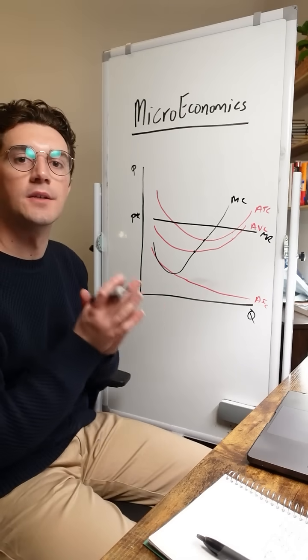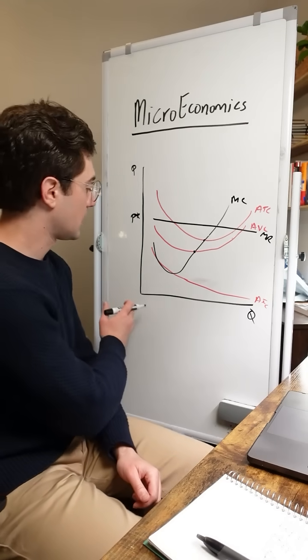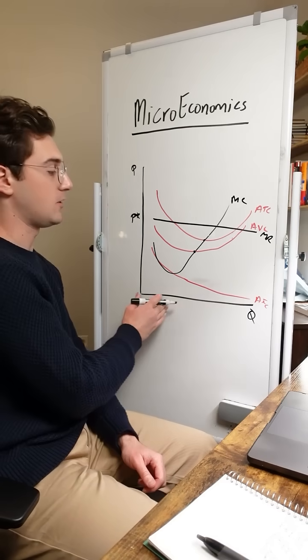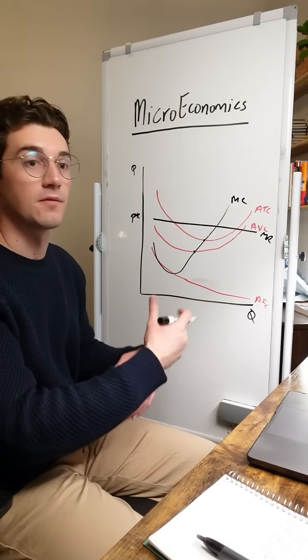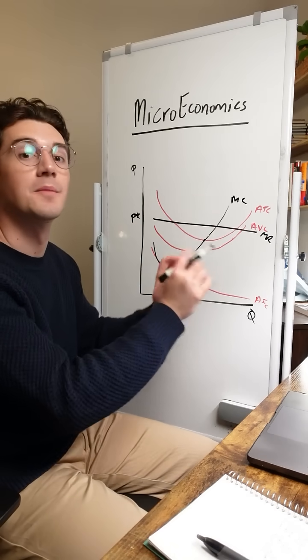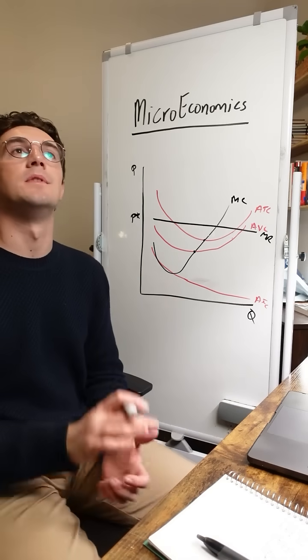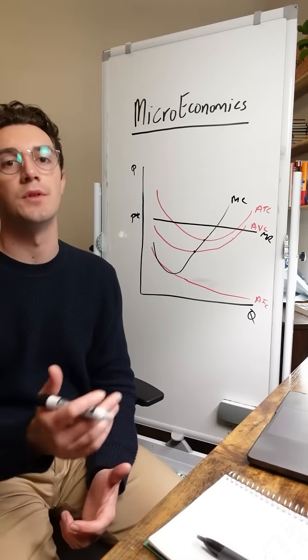Because perfectly competitive firms have to accept the market price no matter how many units they output. Each additional unit of output they generate is going to yield the same additional revenue, the market price, whatever every other perfectly competitive firm is selling their good at. It's not like they can decrease their prices to sell more units.